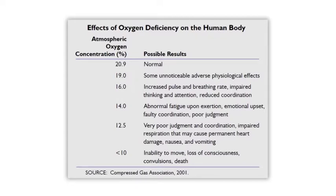At 12.5% oxygen there is very poor judgment and coordination, impaired respiration that may cause permanent heart damage, as well as nausea and vomiting. Below 10% oxygen, there is inability to move, loss of consciousness, convulsions, and death. Below 10% oxygen, it may actually only take a couple of breaths for us to become unconscious.